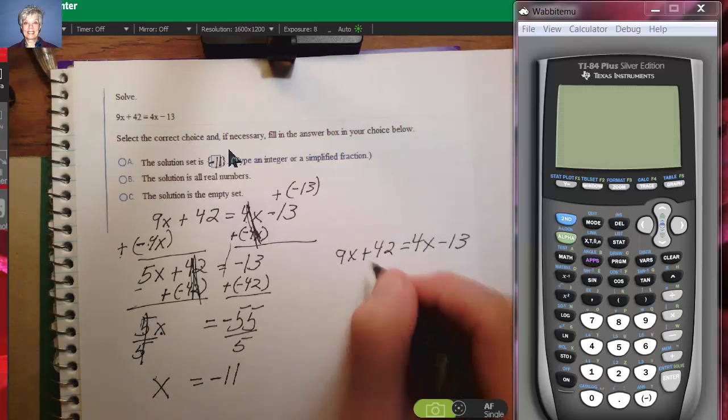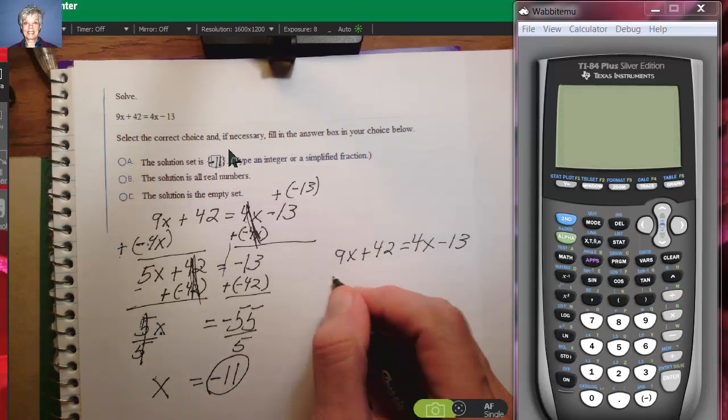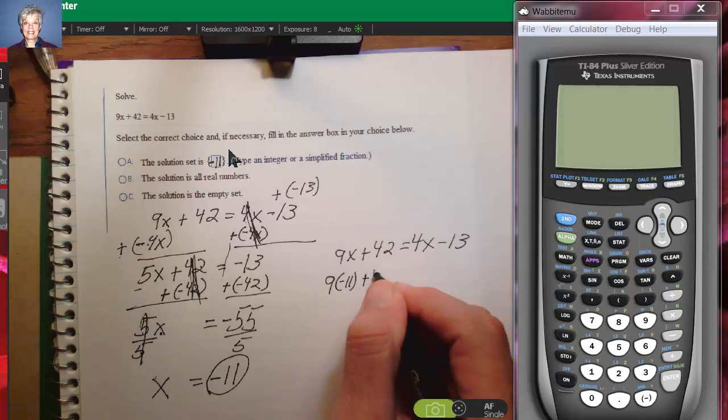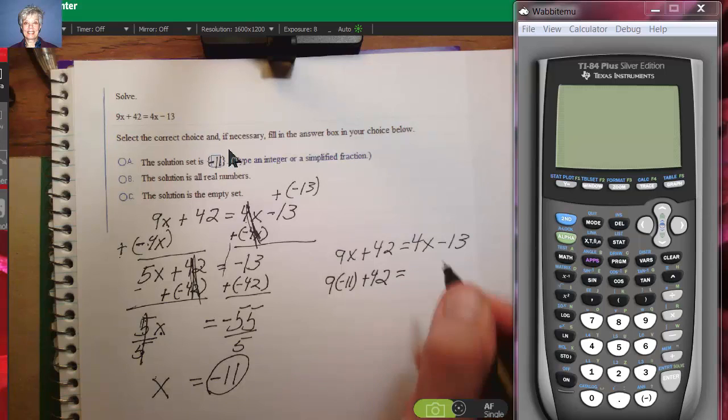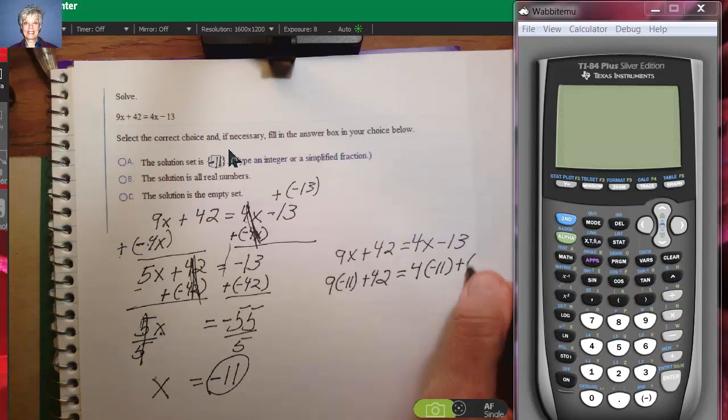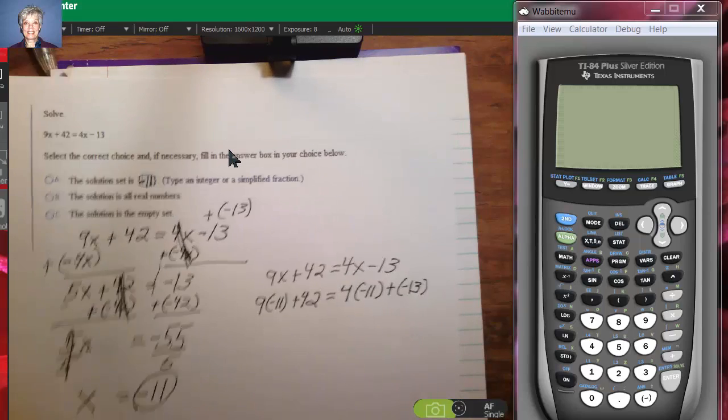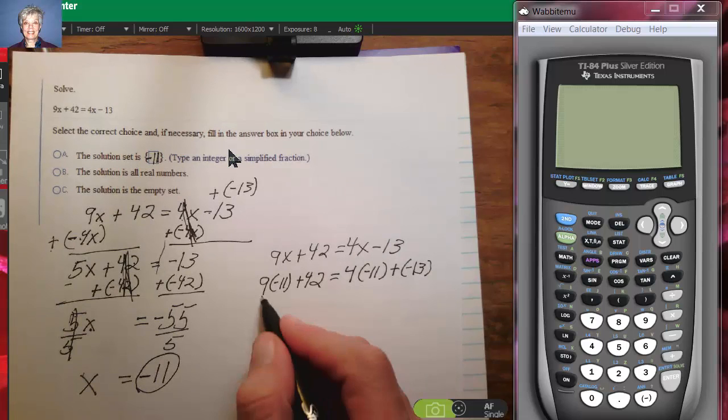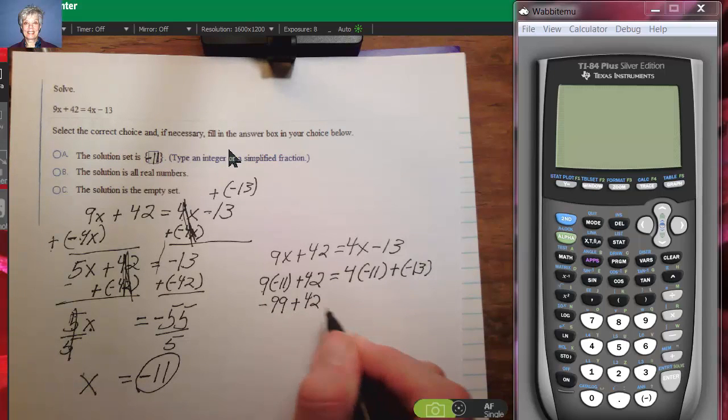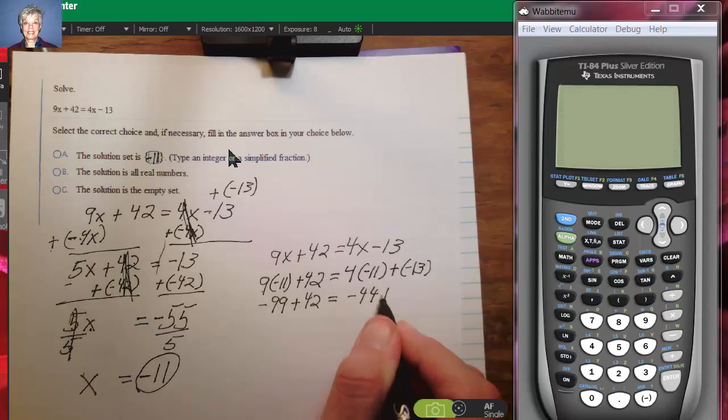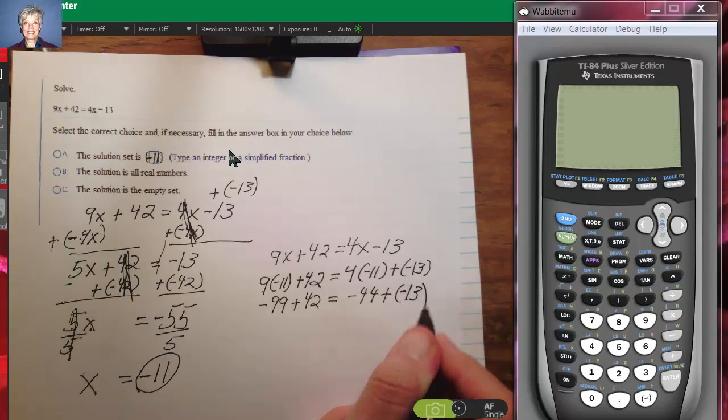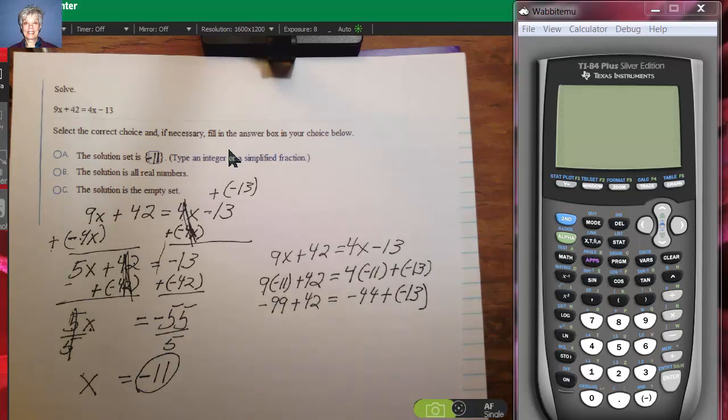I've got 9x plus 42 equals 4x minus 13. And for the x, I'm going to put in my answer, negative 11. So 9 times negative 11 plus 42 is going to equal 4 times negative 11 minus 13. Positive 9 times negative 11 is negative 99 plus 42 equals negative 44 plus negative 13.